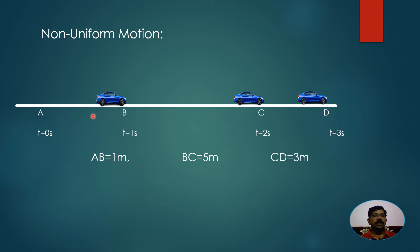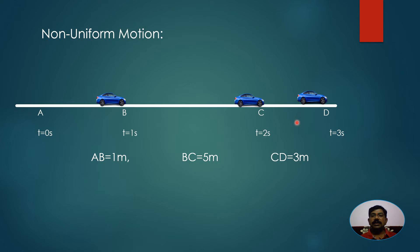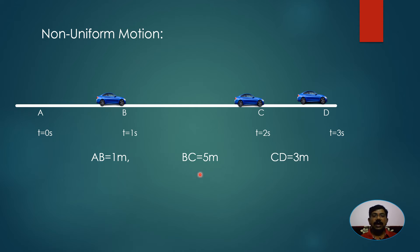Observe this animation. The car started from A and reached B, then C, then D. At t = 0 seconds the car is at A. After 1 second it travelled a distance of 1 meter. In the next second, after 2 seconds total, the car travelled 5 meters - that is the distance between B and C. From C to D it travelled a distance of 3 meters. The time interval for each leg is 1 second.